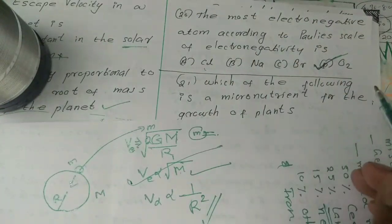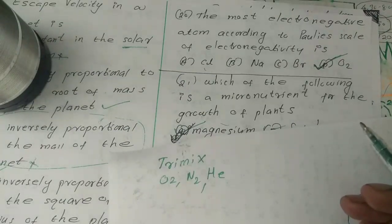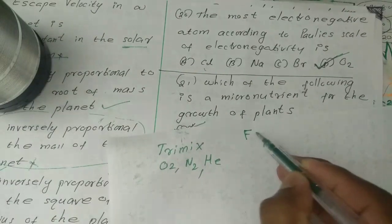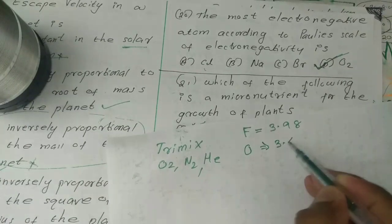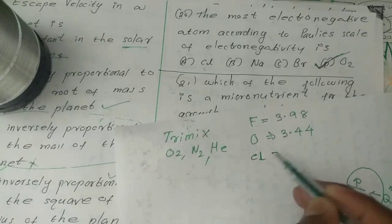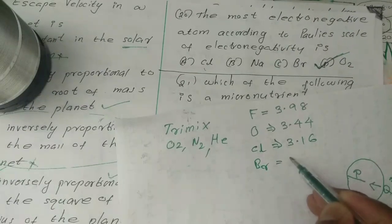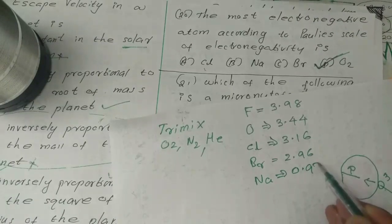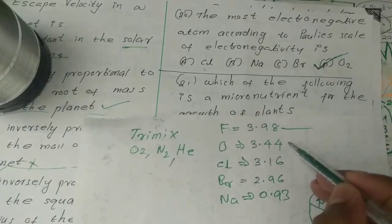The most electronegative atom according to the Pauling scale of electronegativity is: Option A, chlorine; Option B, sodium; Option C, bromine; Option D, fluorine. Fluorine is 3.98, oxygen is 3.44, chlorine is 3.16, and fluorine scores 4.0.